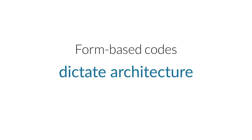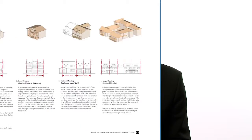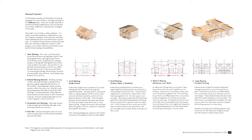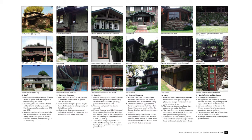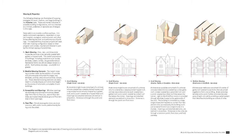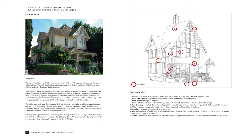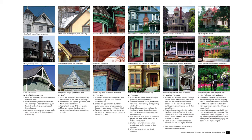The next common misconception is that form-based codes dictate architecture. I've worked on many, and some do require architecture very specifically, while many do not. Here's an example of architecture requirements by style from a code I worked on in Whittier, California. It breaks down all the requirements of what that architectural style needs — the characteristics, materials, and proportions. Cities choose this level of requirement because their historic character is so distinctive that new investment would otherwise have to figure it out on its own.